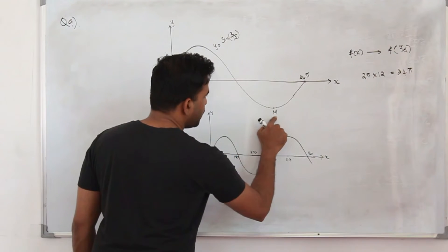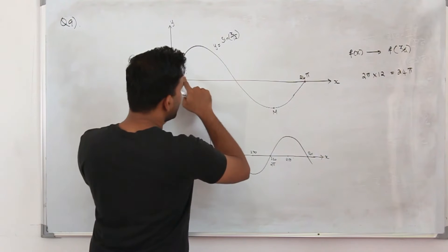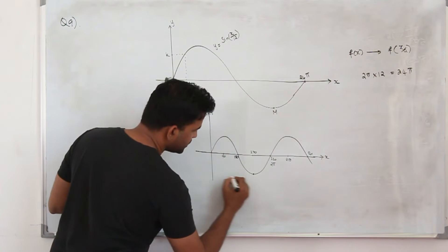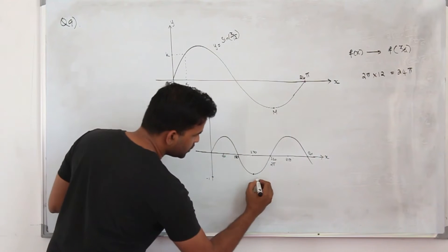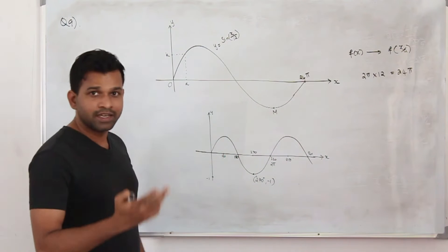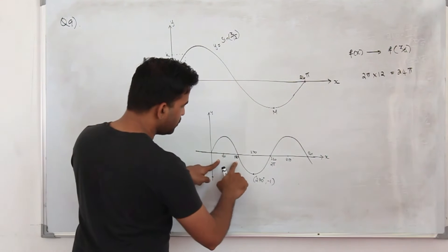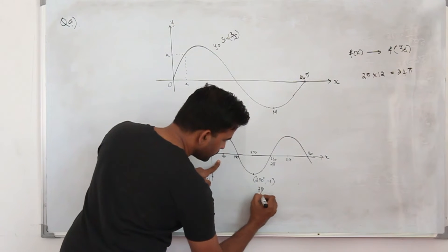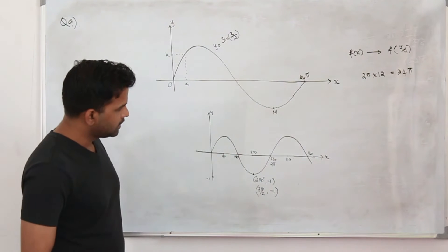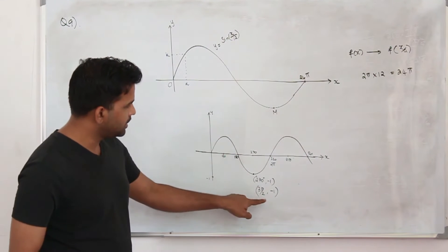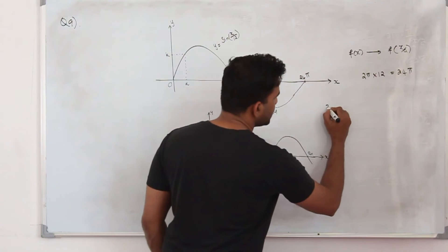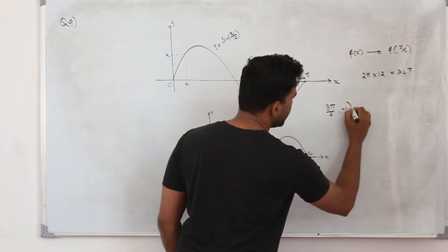They want you to find the minimum point. For the basic sin x graph, the minimum point has y-coordinate minus 1 at 270 degrees. In radians, 270 degrees is 3π/2. So the minimum of sin x is at (3π/2, -1).